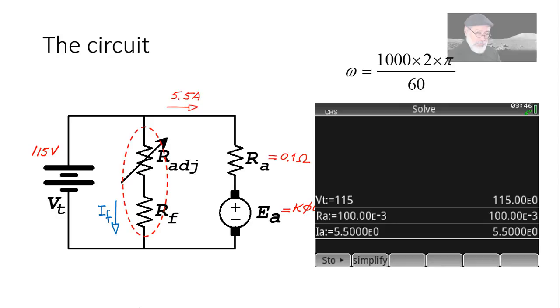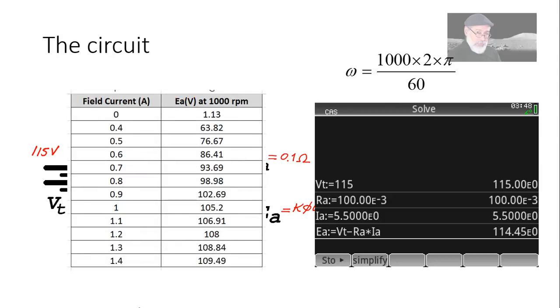In the calculator, let me define Vt, Ra, and Ia with the values given to us. Next, we compute Ea. It is the voltage of the source minus the drop in the resistance of the armature. 114.5 volts.